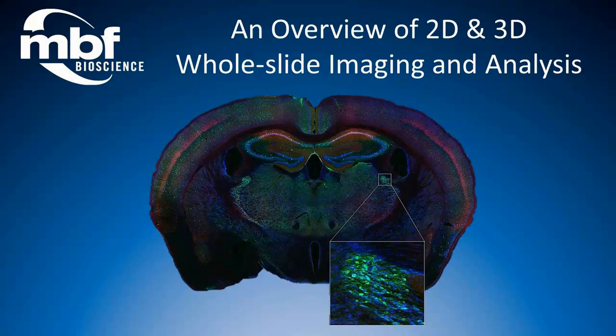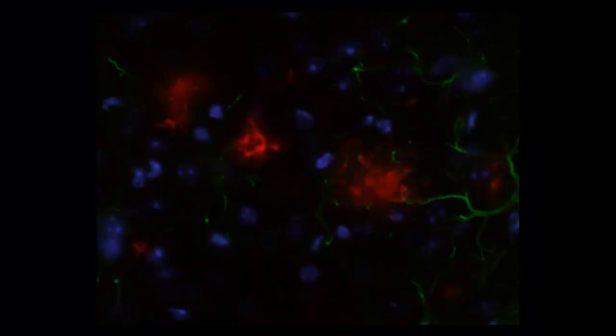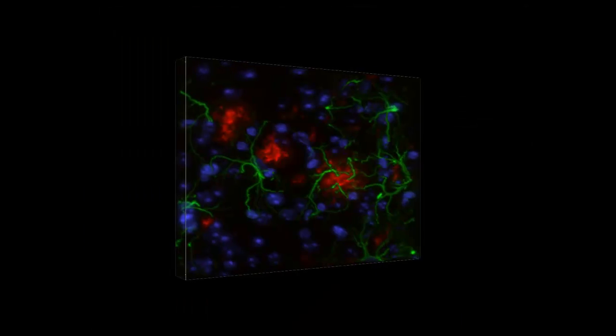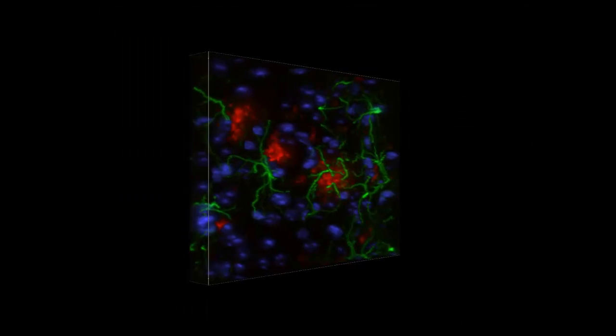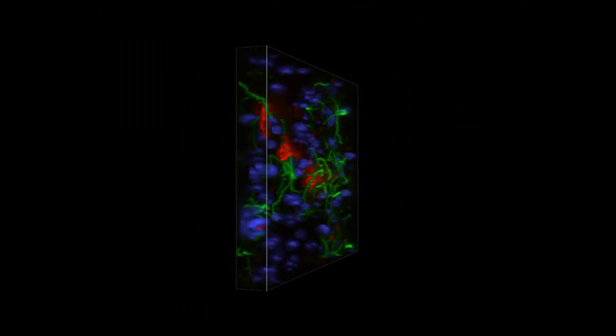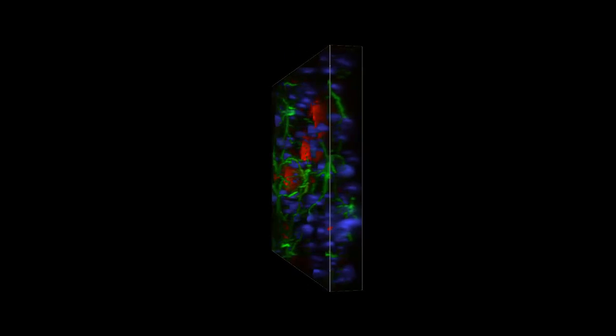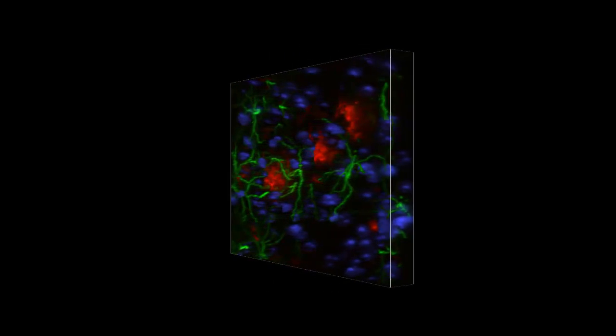With whole slide imaging, you can transform glass slides into whole slide images that you can access, archive, and analyze from any computer. 2D or 3D whole slide images, also called virtual slides, can be created directly in Neuralucida, Stereo Investigator, or Microlucida with the Virtual Tissue 2D or 3D extension modules.